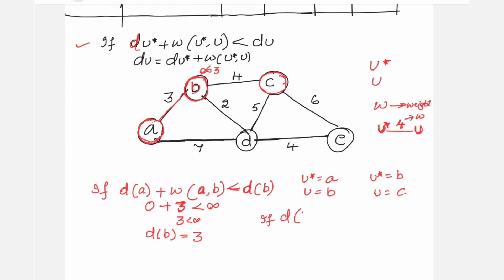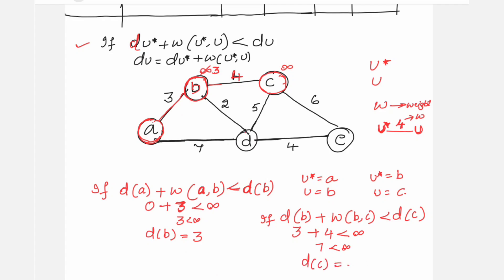With u* = B, check if d(B) + w(B, C) < d(C). Distance of B is 3, weight on B-C is 4, and the initial value to reach C was infinity. So 3 + 4 = 7 < infinity — it is true. Therefore d(C) is updated from infinity to 7.